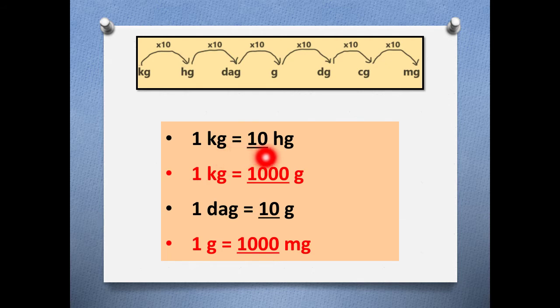So one kilogram has 10 hectograms. If we have to go from kilograms to grams, see here is kilogram and gram is there. So we make one, two, three jumps. So we will write it like this: 10 into 10 into 10, that makes 1000. So one kilogram has 1000 grams.